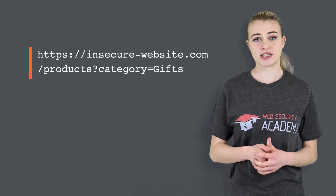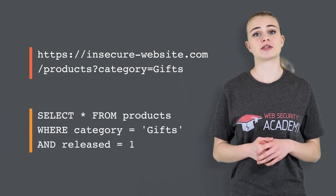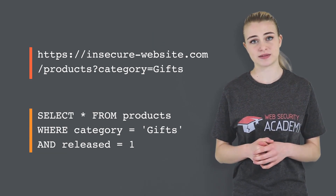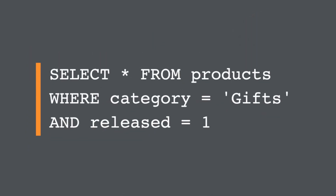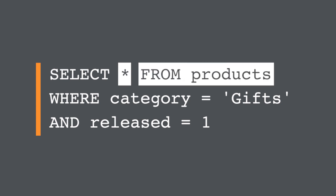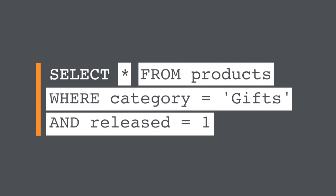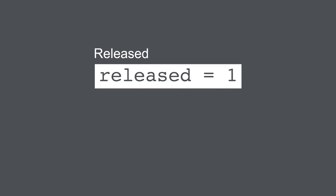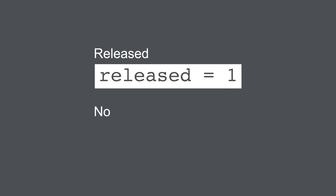Consider a shopping application that displays products in different categories. When the user clicks on the GIFs category, their browser requests this URL. This causes the application to make an SQL query to retrieve details of the relevant products from the database. This SQL query asks the database to return all details from the products table, where the category is GIFs, and released is 1. The restriction that released is 1 is being used to hide products that are not released. For unreleased products, presumably released is 0. The application doesn't implement any defenses against SQL injection attacks.